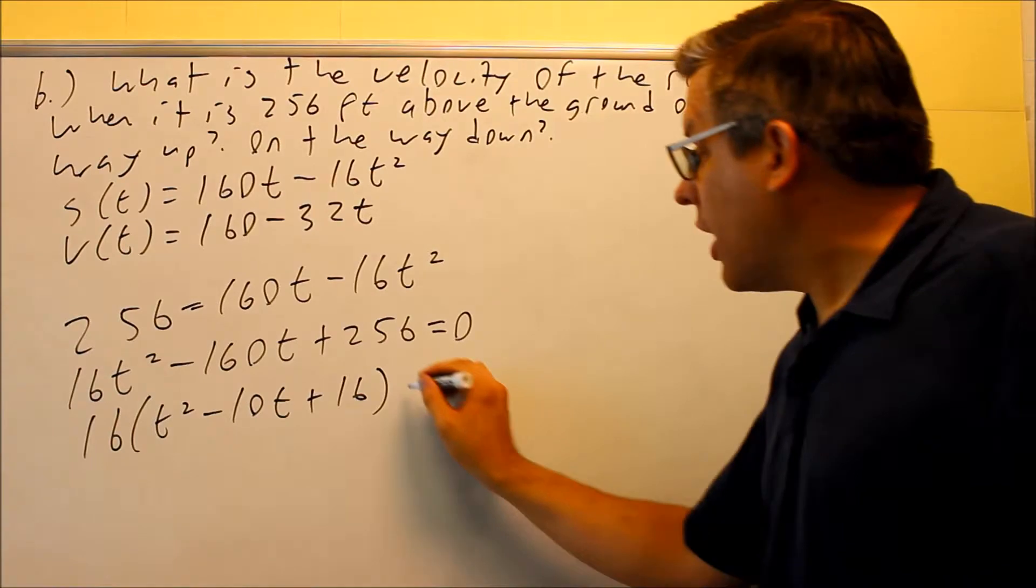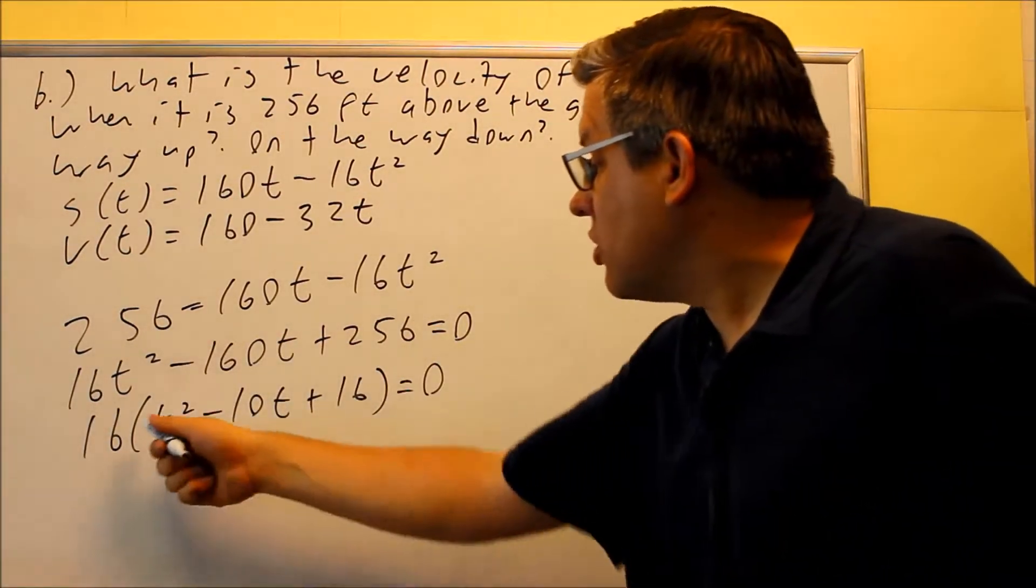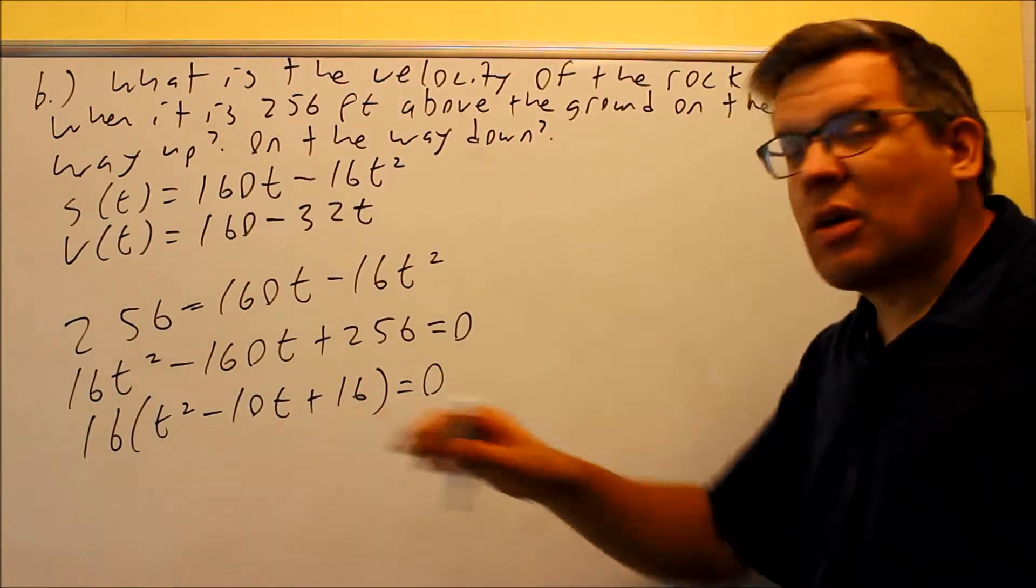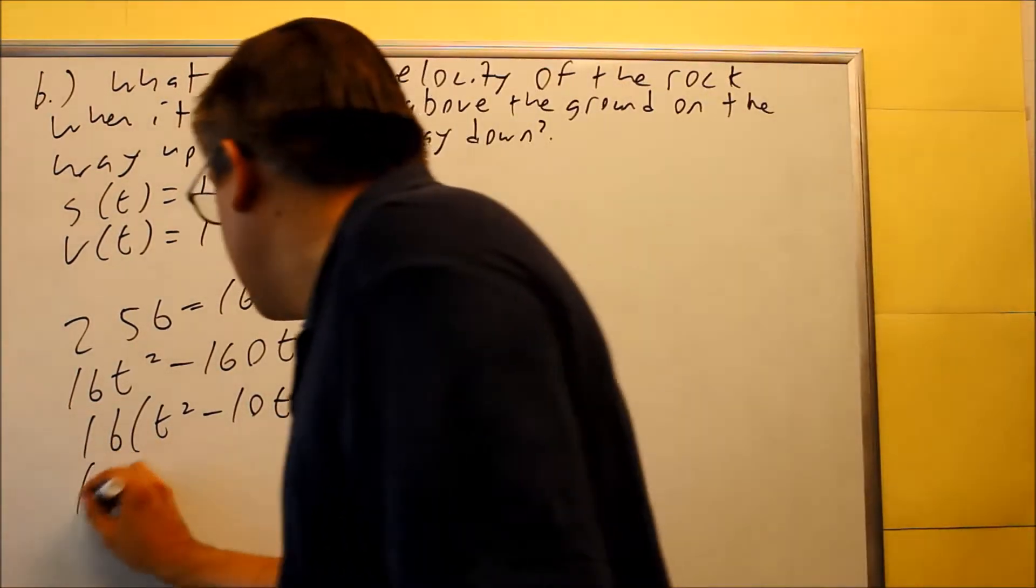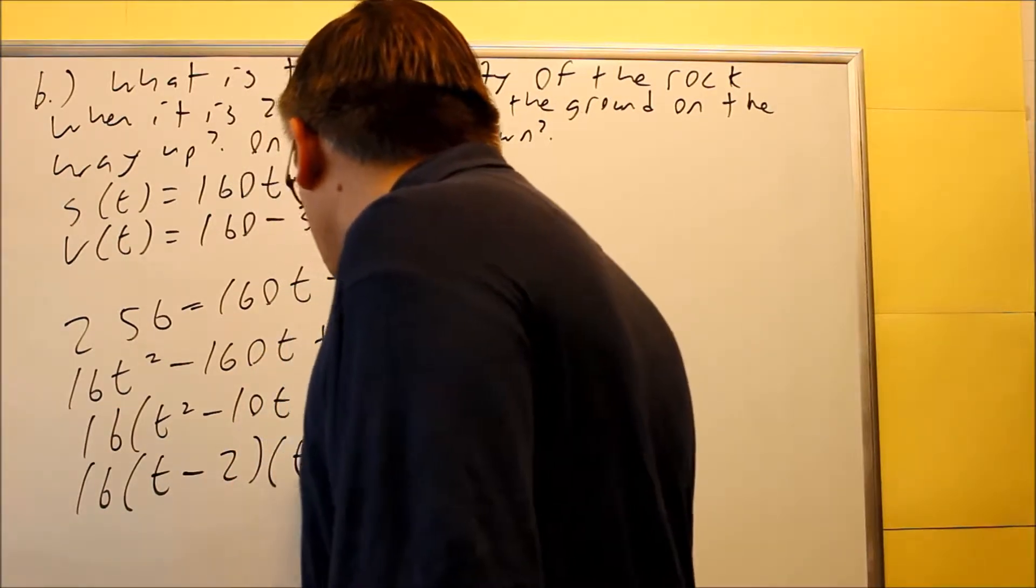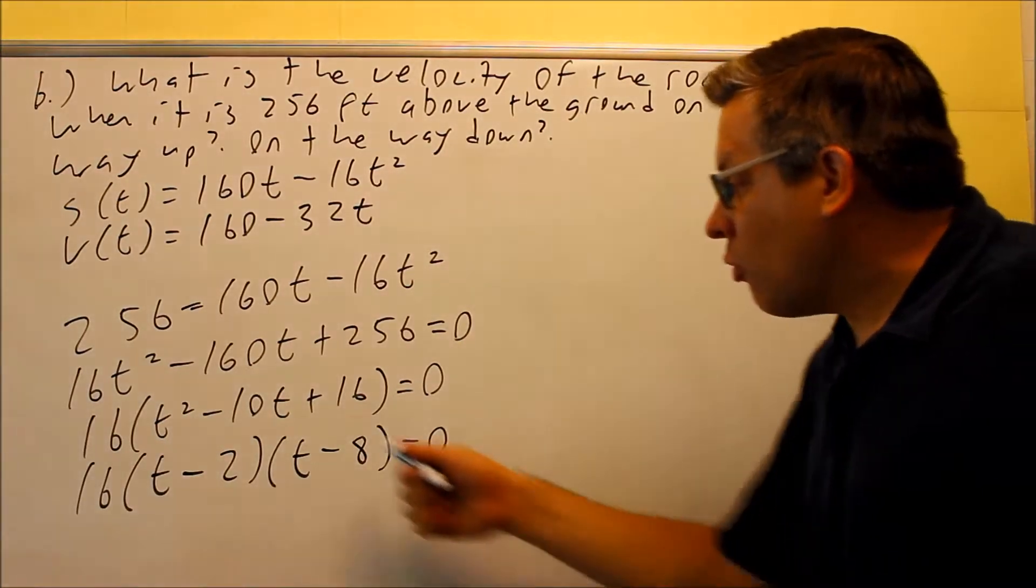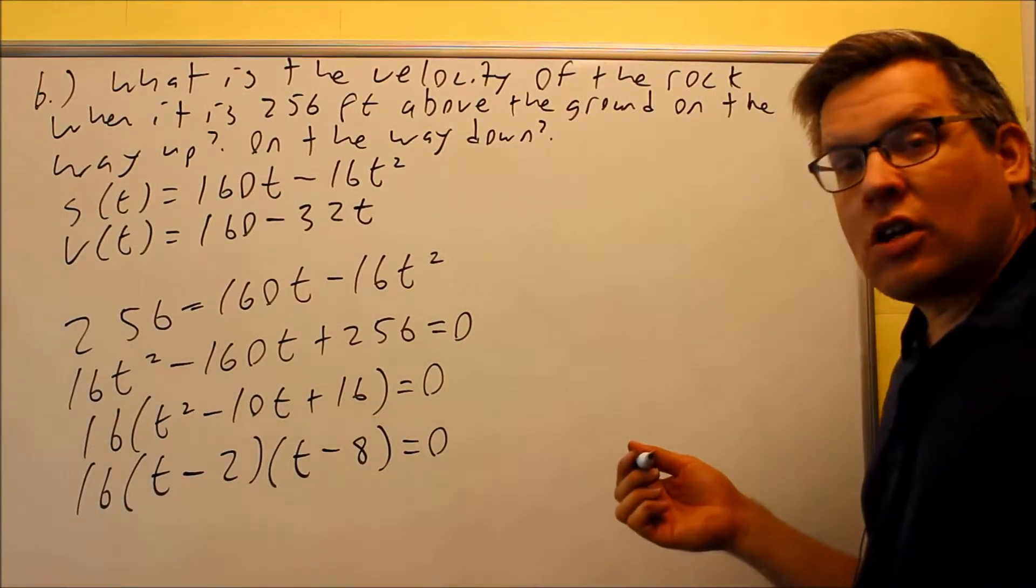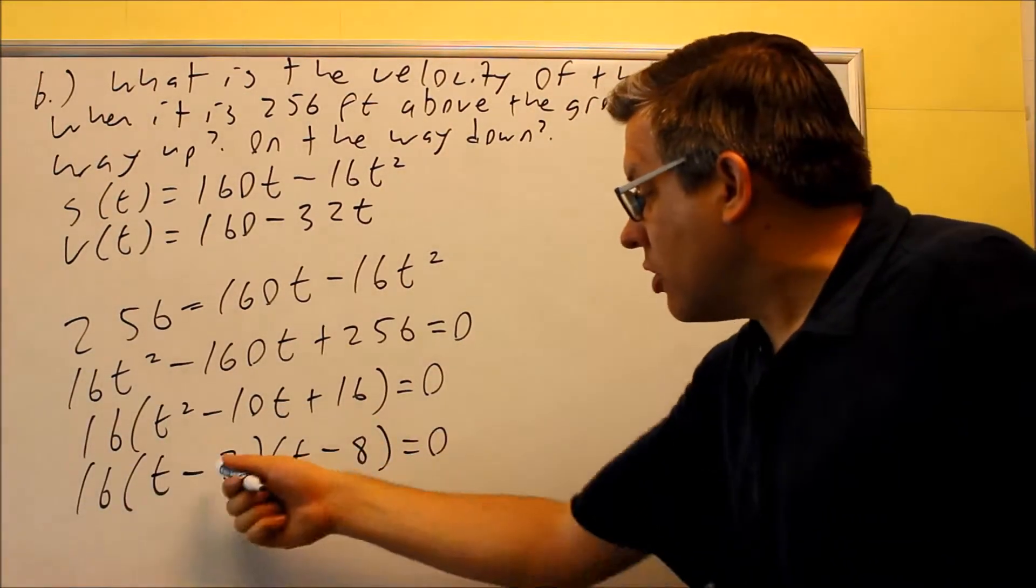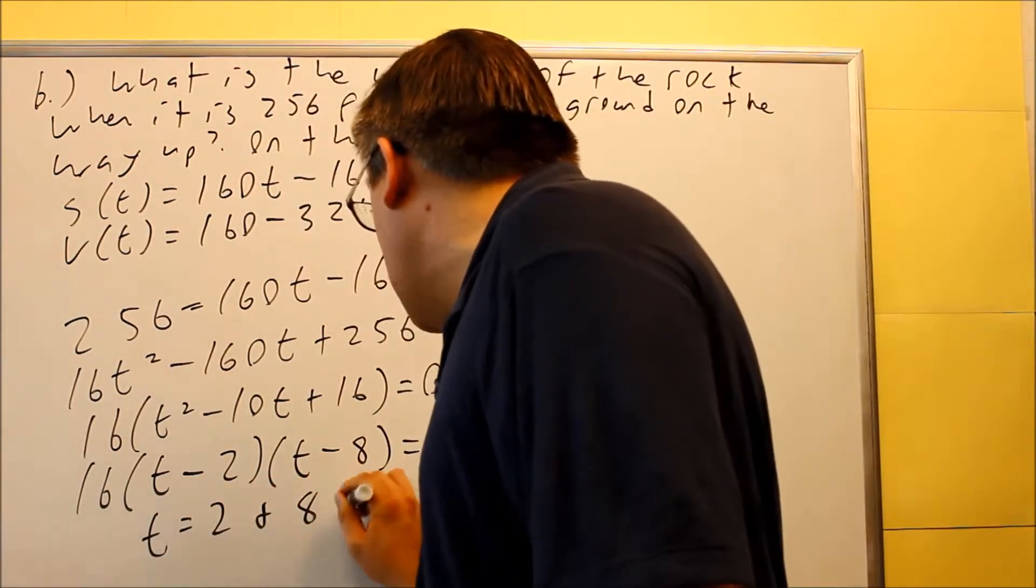When you do that, you should get this as a result. Dividing everything out by 16, we'll get this on the inside. This is something we can factor one more time. So we're going to get t minus 2 and t minus 8 as a result when we factor that. Setting that equal to 0, the first one can't be equal to 0. Setting these two equal, you're going to get t is equal to 2 and 8 seconds.